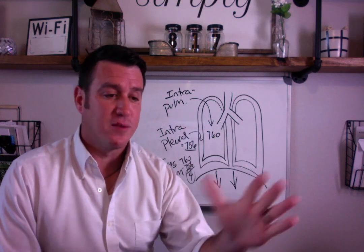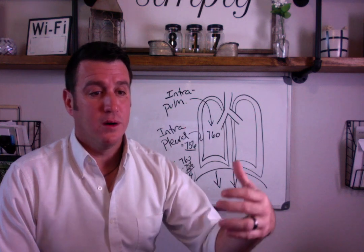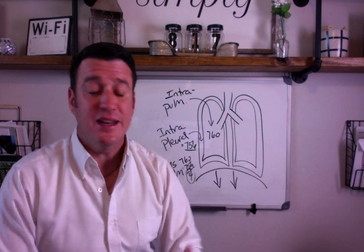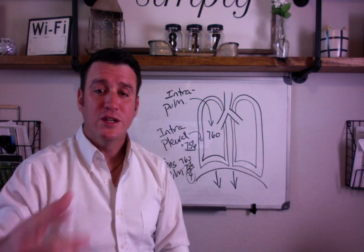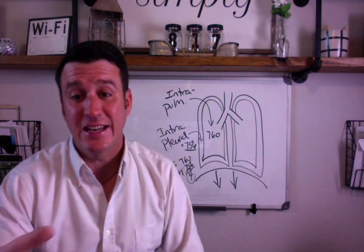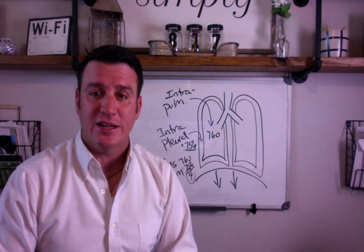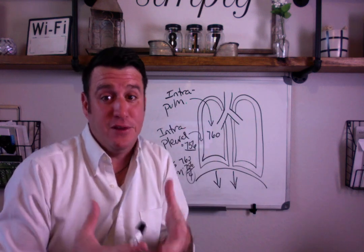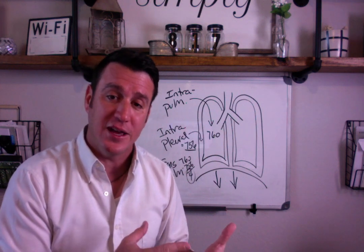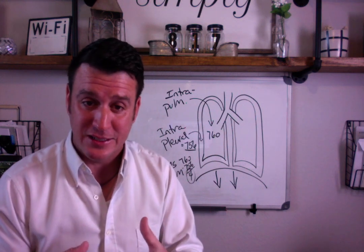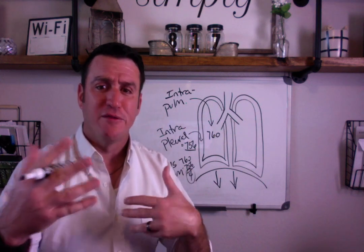Now, when you put somebody on a mechanical ventilator or any type of positive pressure breathing — the diaphragm can still contract and still creates a negative pull. That's how the ventilator is triggered when a patient is spontaneously breathing on a vent. But what makes it different is that the positive pressure from the ventilator is forcing air in.